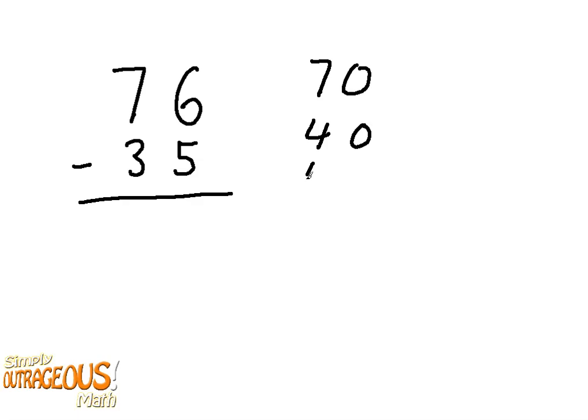In this example, we have 76 minus 35. 70, 40, 46, 41. 70 minus 30 is 40, 40 plus 6 is 46, 46 minus 5 is 41. That is our answer.